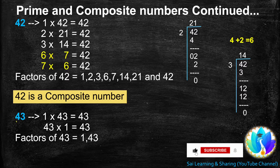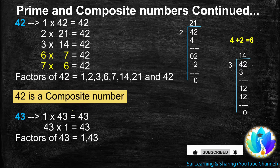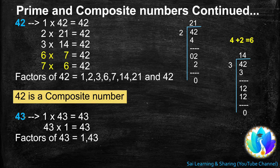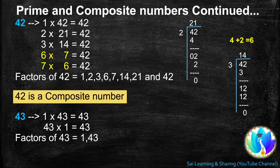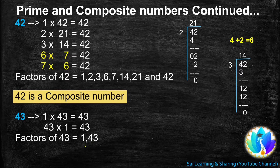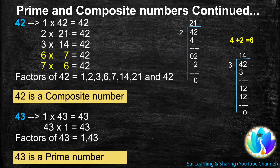Next, 43. 1 is a factor of every number, so 1s are 43, 43. 43 is not a multiple of 2 or 3. There is no combination of 43. At last, 43 is a multiple of 43: 43s are 1, 43. Factors of 43: 1 and 43. A number that gets only 2 factors is a prime number. So, 43 is a prime number.